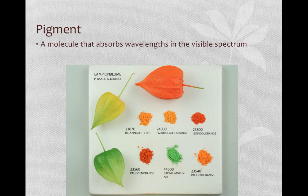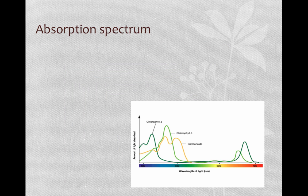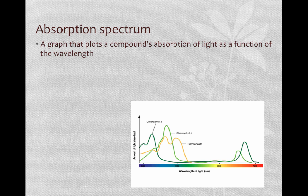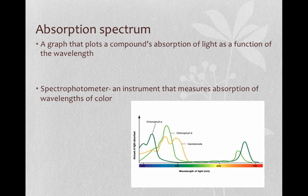A pigment is a molecule that absorbs wavelengths in the visible spectrum. It absorbs only certain wavelengths of light. Dyes are an example of a pigment that shows a specific color. Black is the absorption of all colors and white is the reflection of all colors. A given type of molecule can absorb only certain wavelengths. If we plot a compound's absorption of light as a function of the wavelength, the result is an absorption spectrum. Absorption spectra can act as fingerprints for compounds. They can be used to identify a compound. A spectrophotometer is an instrument that measures the absorption of wavelengths of color.